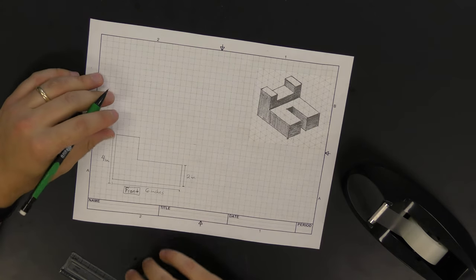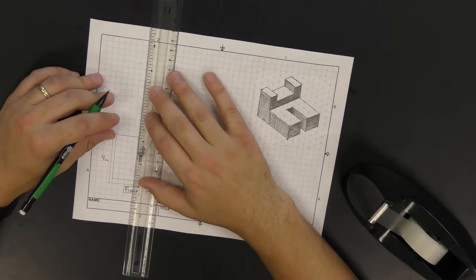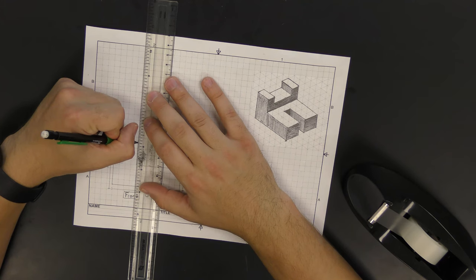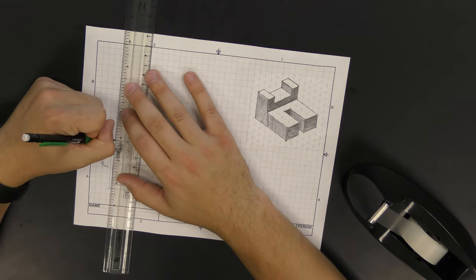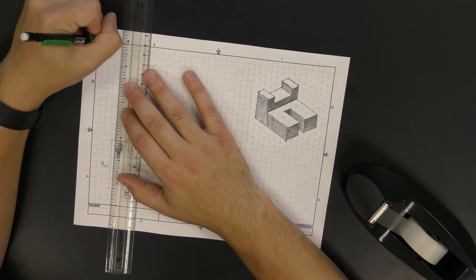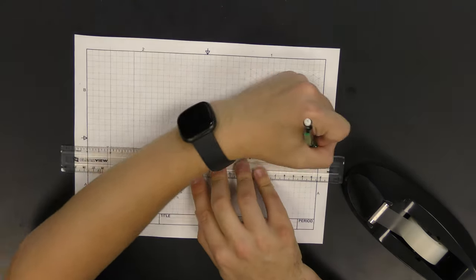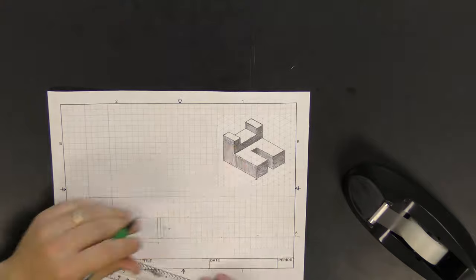Once we finish the front view, the next step is to create some construction lines that will show us where to line up our top and our right side views. So I'm using a ruler to create a really light shaded line that connects all the major intersections of points on my front view.